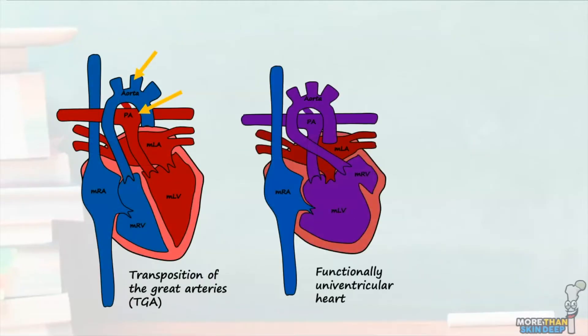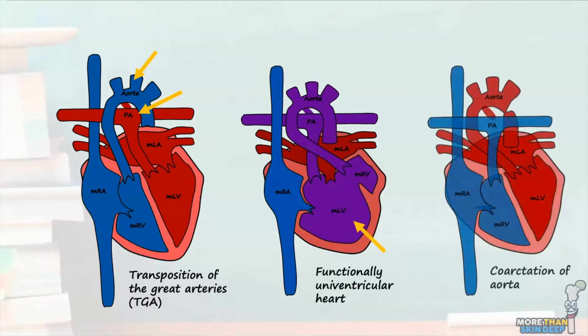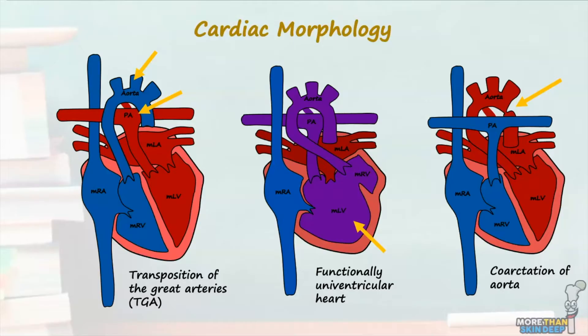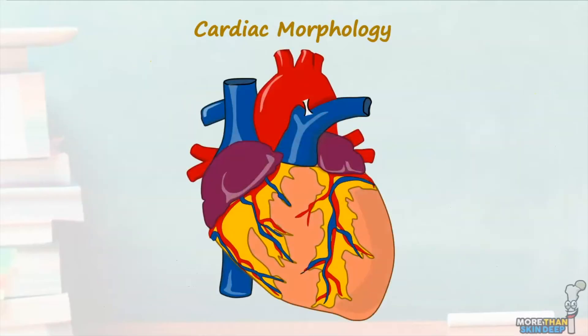A thorough and comprehensive understanding of cardiac morphology is essential when understanding the pathological features of congenital cardiac defects. Congenital heart disease can vary hugely, anywhere from transposition of the great arteries to a univentricular heart or even coarctation of the aorta. In each of these cases, cardiac morphology underpins the pathological development of these lesions and must be considered when evaluating patients with these conditions. In today's tutorial, I'll be taking you through the fundamentals of cardiac morphology by considering each of the morphological components of the heart using sequential segmental analysis.